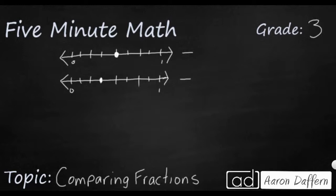If we count the number of spaces, I've got one, two, three, four, five, six, seven — I've got eight spaces. So both of these are broken up into eighths. That's how we would compare them.